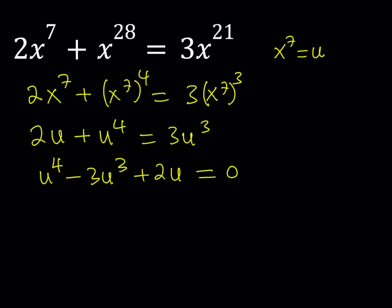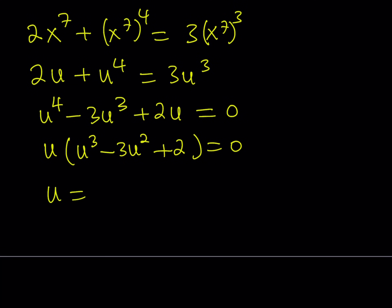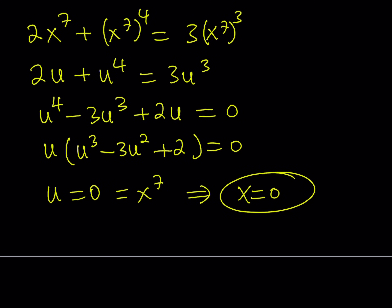We're going to be looking for two different kinds of things here: real solutions and complex solutions. For complex solutions, I'll guide you in the right direction since I want to focus more on the real ones. First of all, notice that u is a common factor, so I can pull it out and get u times the quantity u cubed minus 3u squared plus 2. Having u as a factor means that u equals 0 is a solution. You could tell that from the beginning because if x equals 0, it works in the original equation. So u equals 0 means x to the 7th power equals 0, which implies x equals 0 is a solution.